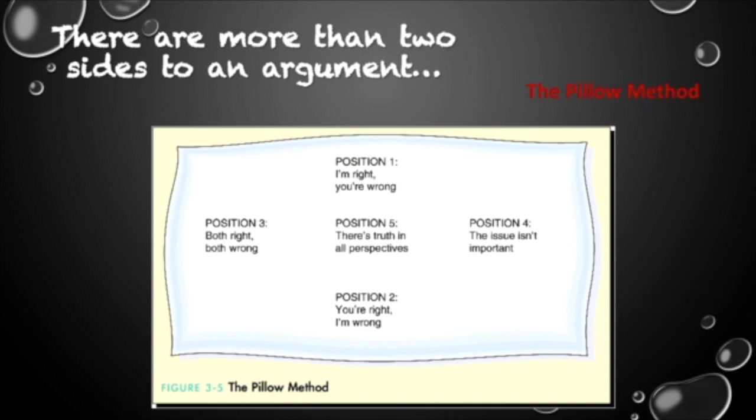And then once I've come to that conclusion, I can flip to the next position, position two. What if it was that you were right and I was wrong? What is it that you could be thinking? Why would you think you were right and I'm wrong?